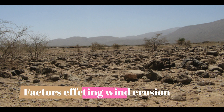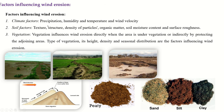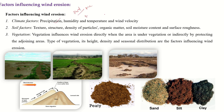Factors affecting wind erosion are: climate factors, soil factors, and vegetation factors. Under climate factors, in arid and semi-arid regions there is less rainfall, resulting in more erosion. Soil factors such as soil texture, structure, particle density, and organic matter play a major role. In sandy soils, higher erosion occurs.